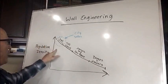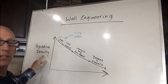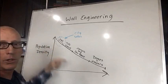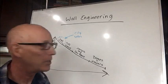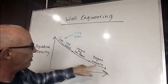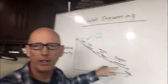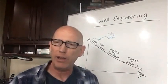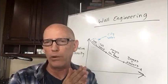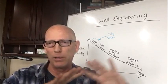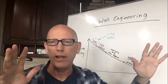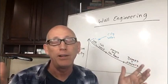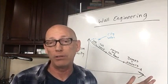On this axis, we have population density. The higher the population, the more you're going to want a wall, and the lower, the less you need one. Here's why: if you have a border area that's out in the middle of nowhere and there's nobody on either side for miles, all you really need is a drone.